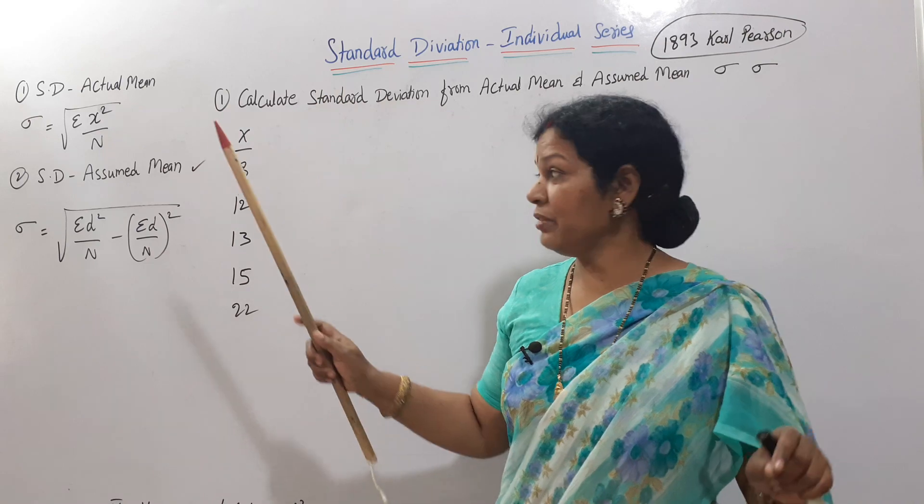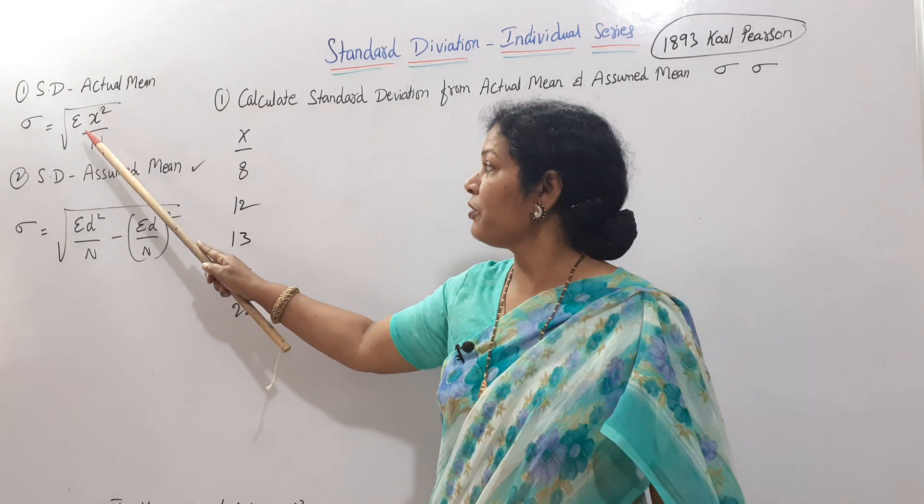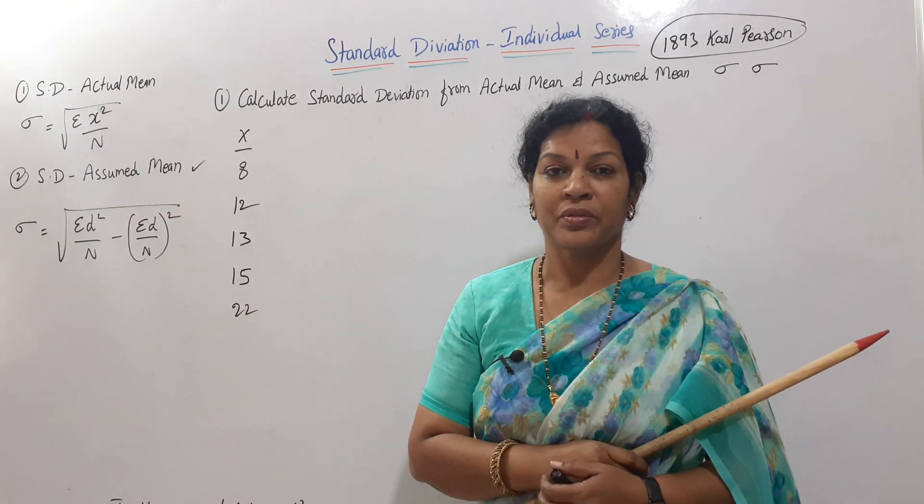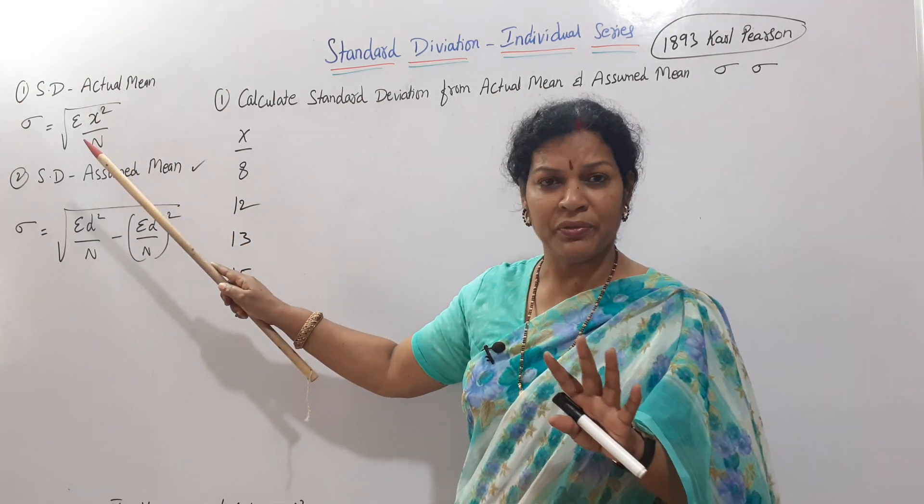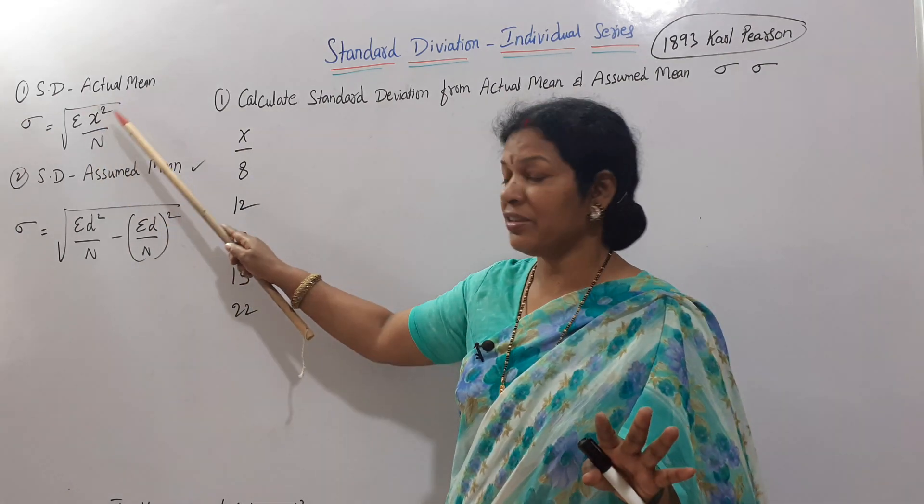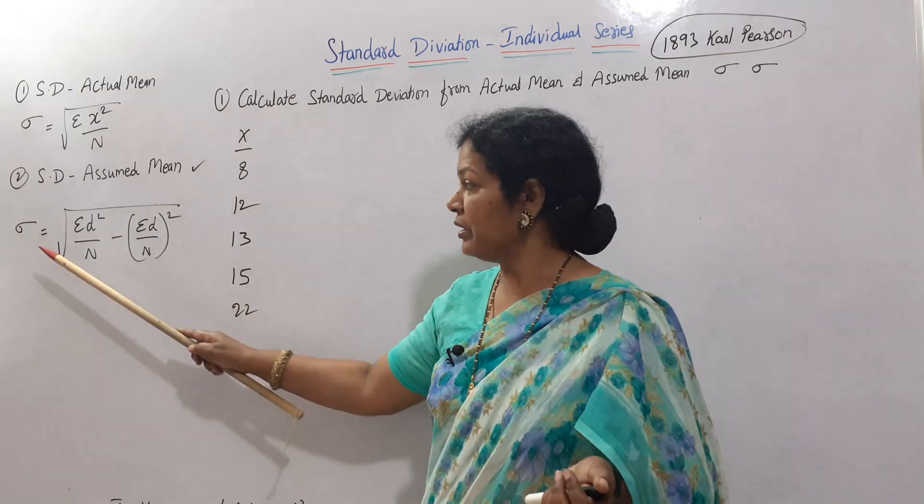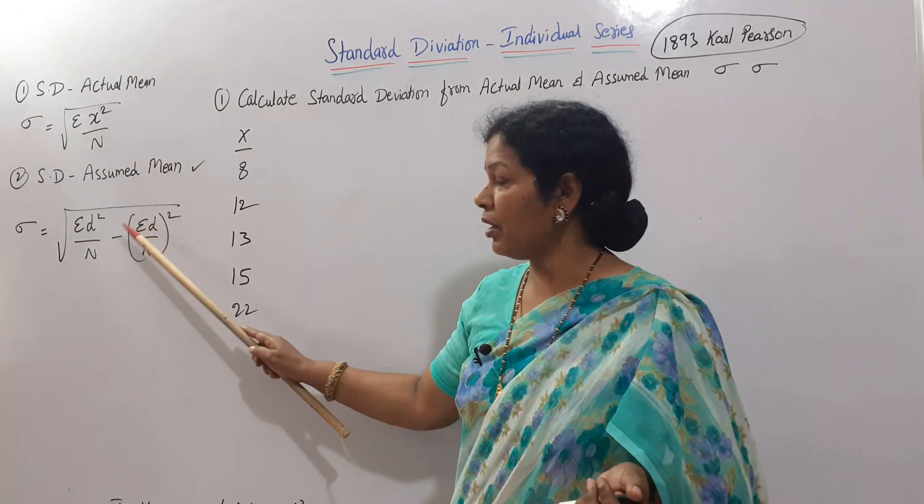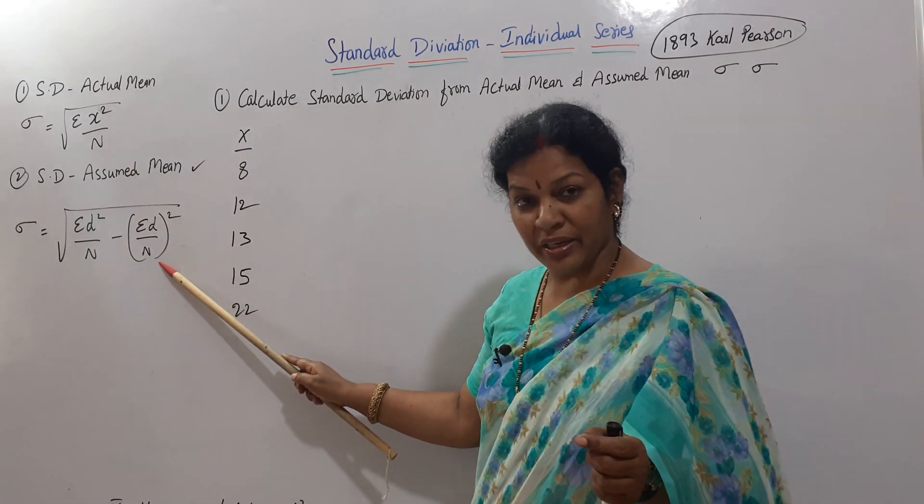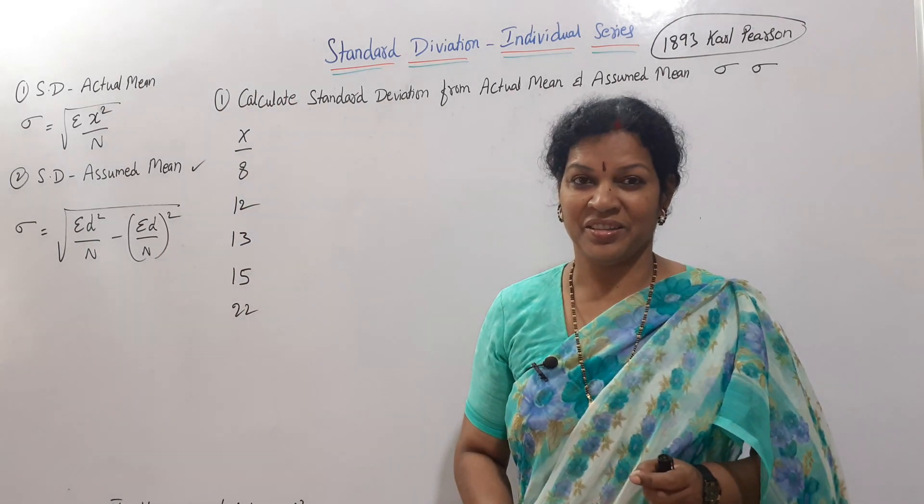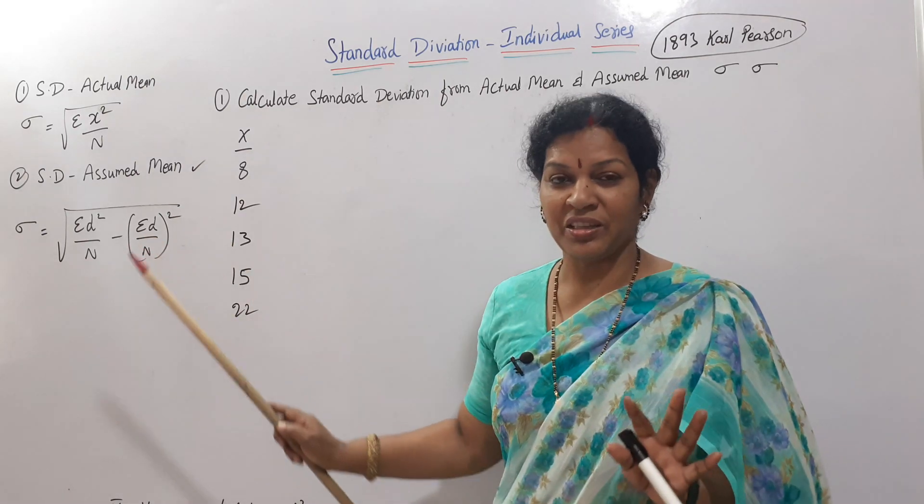Standard deviation in individual series: if you go for actual mean method, the formula is σ = √(Σx²/n). Say along with me: σ equals root of sigma x square by n. If you go for assumed mean, σ = √(Σd²/n - (Σd/n)²). Root of sigma d square by n minus sigma d by n whole square.